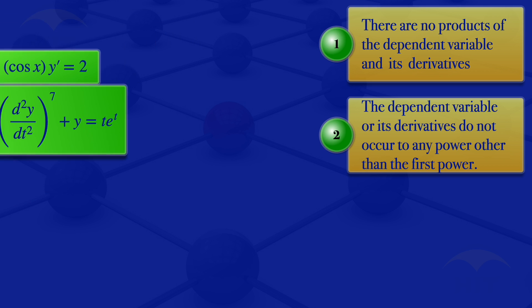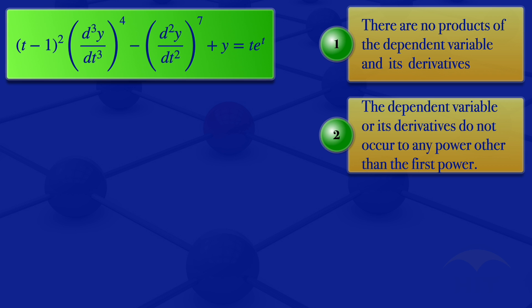Moving to the next equation: (t − 1)² multiplied by the third derivative of y with respect to t, raised to the power 4, minus the second derivative of y with respect to t raised to the power 7, plus y equals t times e^t. There are no products of the dependent variable and its derivatives, so condition 1 is satisfied. However, the third derivative of y is raised to power 4 and the second derivative is raised to power 7, violating condition number 2. Therefore we conclude that it is nonlinear.